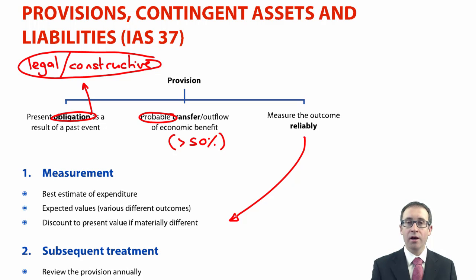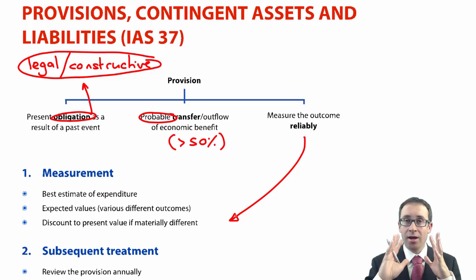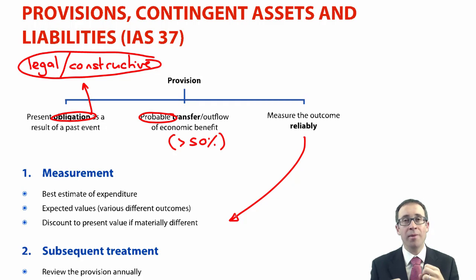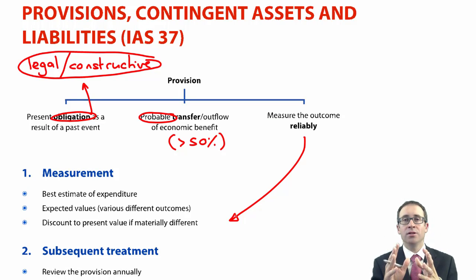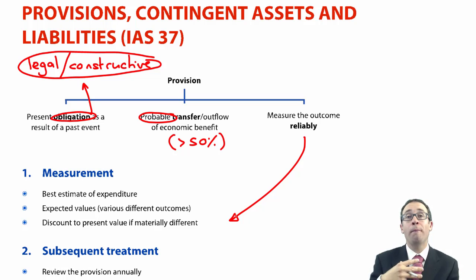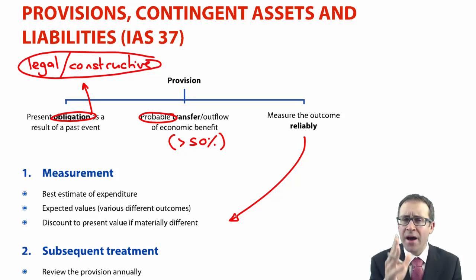Be careful when comparing the best estimate versus expected values — a lot of people get confused. The best estimate of expenditure means it's probable that you are going to lose a court case. There is a 70% chance that you will pay $10 million, but a 30% chance you will pay $2 million. There is only one possible outcome — you're going to lose the court case. So you go with the best estimate: 70% is more likely, so you would make your provision for $10 million. Credit provision, debit the expense, $10 million.